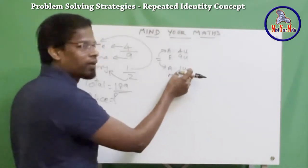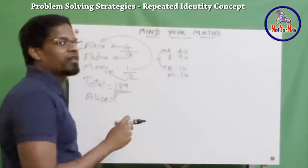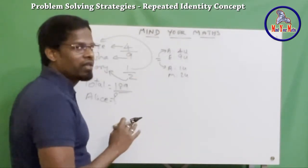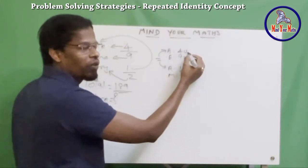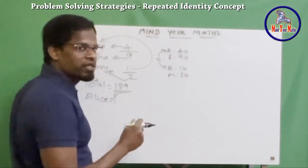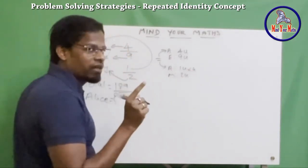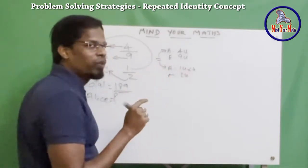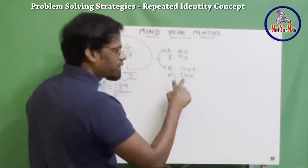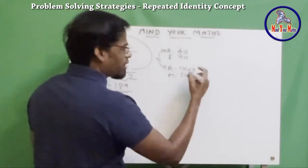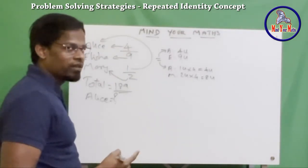Think of it like one apple cut into four pieces and another whole apple — both represent the same apple. To make the units consistent, we multiply the second fraction through by four. So Alice's 1 unit becomes 4 units, and Mary's 2 units becomes 8 units. Now Alice is consistently represented as 4 units across both comparisons.